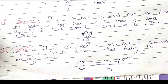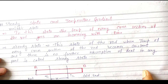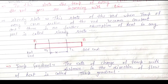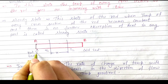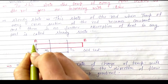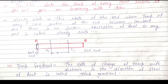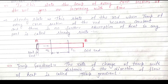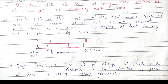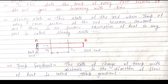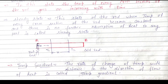So there are three modes of transfer of heat: first is conduction, second is convection, and third is radiation. Next point is temperature gradient and steady states. Let us suppose we have a rod AB — this is end A and this is end B. Initially, we heat up this end, the temperature rises up, and then heat transfers from end A to end B.